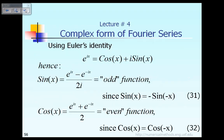In order to talk about the complex form of Fourier series, let us start with the so-called Euler equation, or Euler identity, that we have learned before. It says e raised to the power ix is equal to cosine of x plus i sine of x. In this equation, the definition of i is i squared is equal to minus 1. That is the definition of i in the Euler identity.